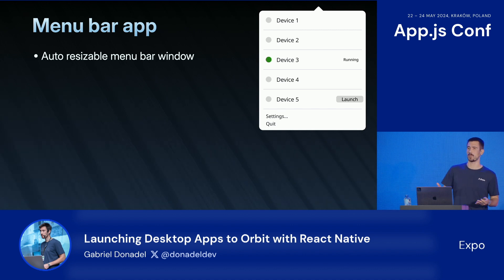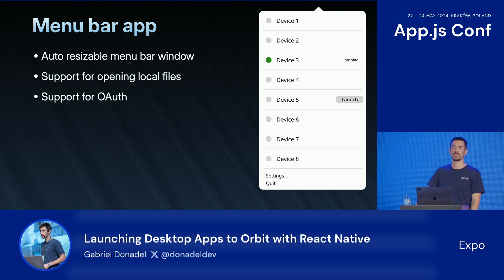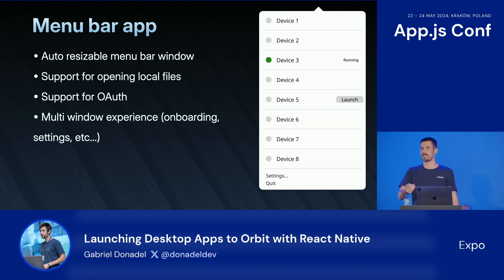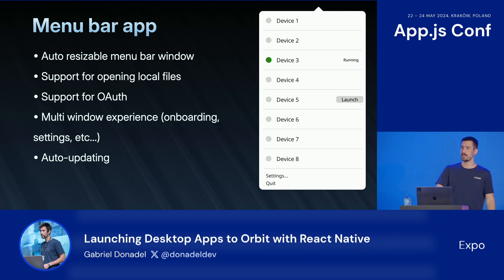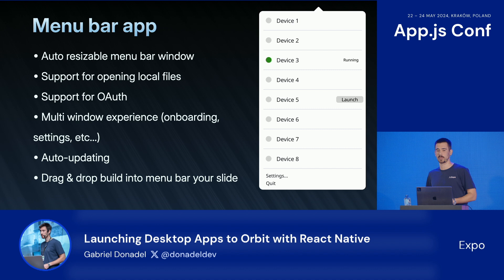First, an auto-resizable menu bar window — given the amount of devices you have, it should just adapt to the screen size. Support for opening local files, aka just a file picker. Support for OAuth to authenticate with Expo servers. Some sort of navigation library that supported multiple windows — because on desktop you'll see multiple different windows, which would actually require a different React Native instance to be running. Also, auto-updating, because we would need to tell users somehow that we have a new version after they downloaded from GitHub. And finally, drag-and-drop support for dragging your app directly into the menu bar and installing it.